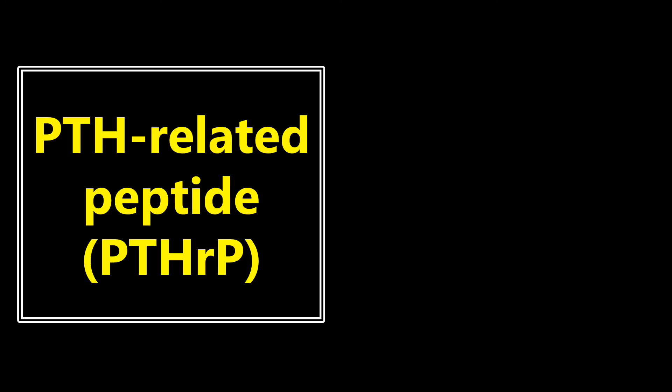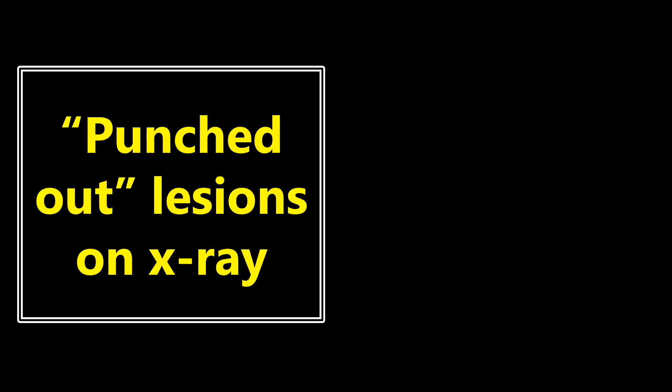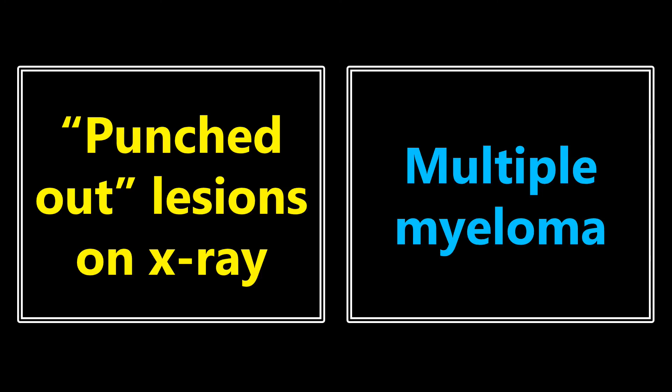PTH-related peptide: really the only time you'll see this come up is when they're talking about squamous cell carcinoma of the lung. This is one of several paraneoplastic syndromes that occurs in the lung. Punched-out lesions on x-ray: this is usually associated with multiple myeloma. There are many conditions that can cause osteolytic lesions, but when they say punched-out, they're pointing you toward multiple myeloma.